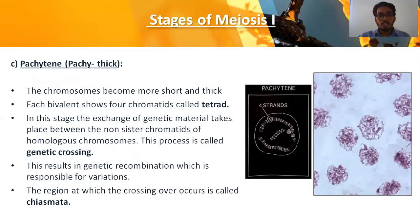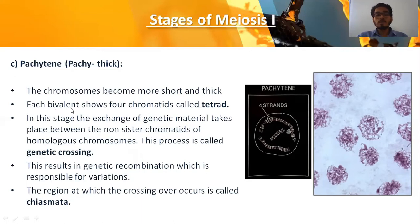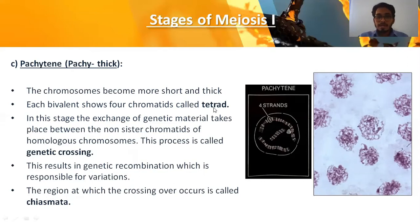In the pachytene stage — 'pachy' refers to thick — the chromosomes are much more coiled, shortened, and clearly visible. Each bivalent shows four chromatids: one chromosome exhibits two chromatids, so when two chromosomes are paired they exhibit four chromatids, hence the term tetrad. This is the microscopic view of the pachytene stage.